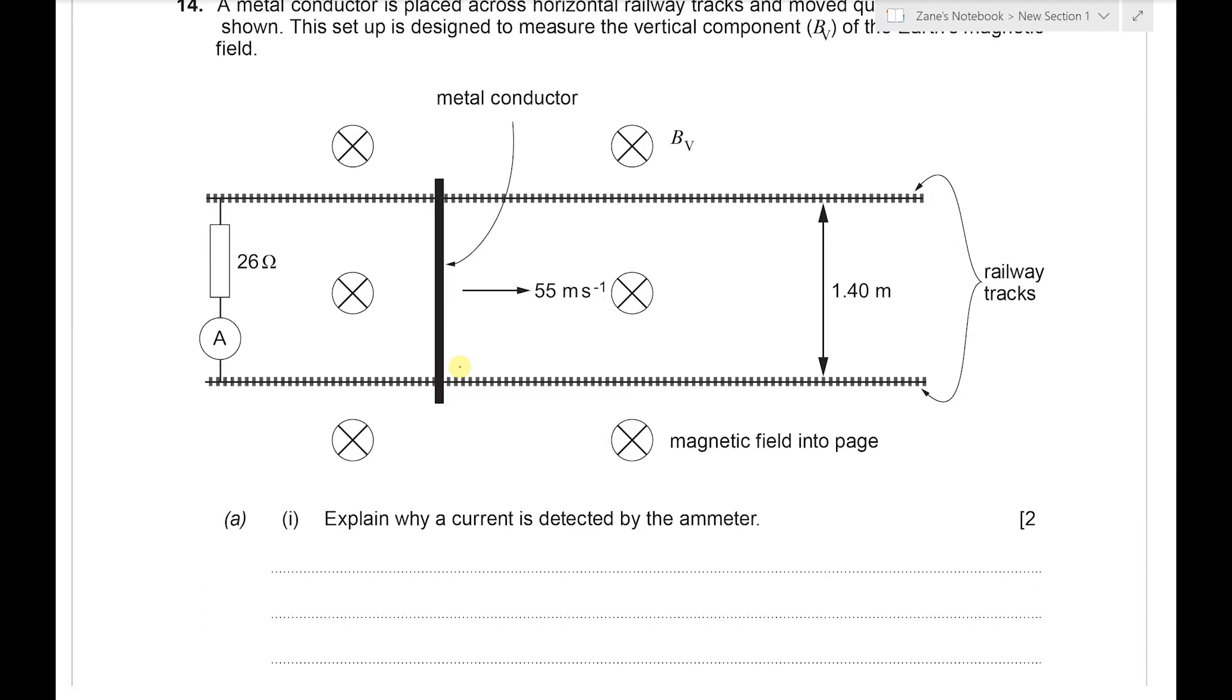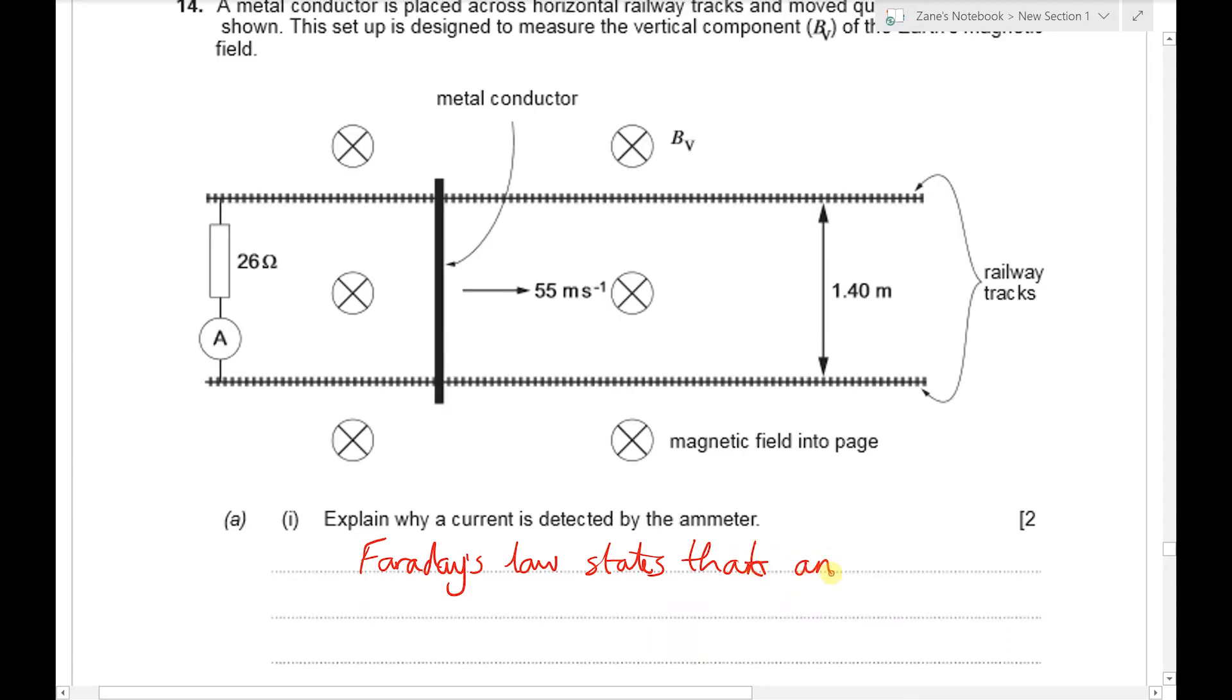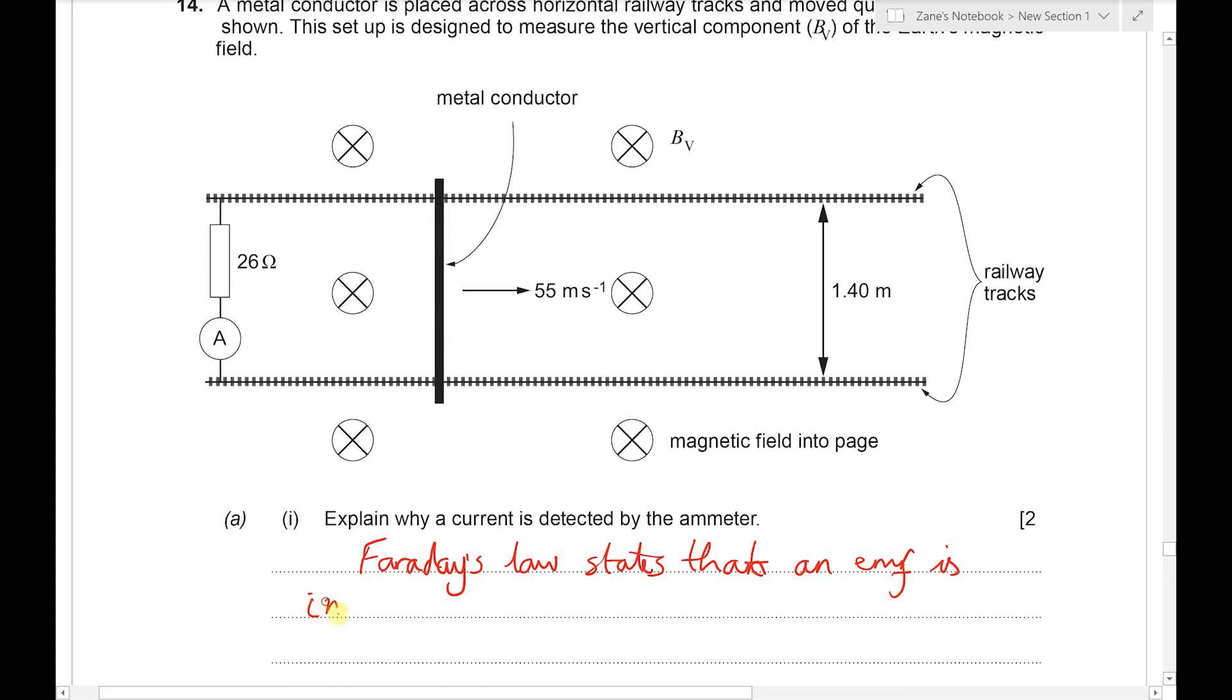We've got to explain why a current is detected in the ammeter. Well, this is an example of Faraday's law, and this tells us that an induced EMF, or an EMF is induced. In this case it's probably worth referring to it in the flux cutting terms. So an EMF is induced since flux is cut, and because there's a complete circuit, current will flow.